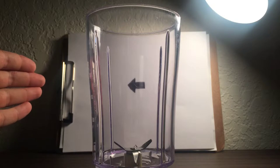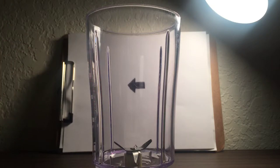So as you see, there's an arrow over there pointing to the left. And when you see it through the glass without water, it is still pointing to the left.